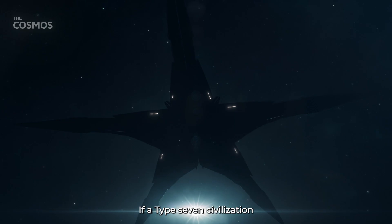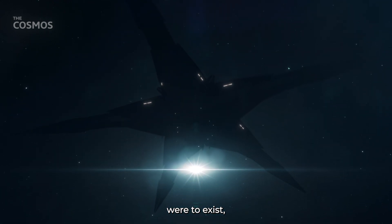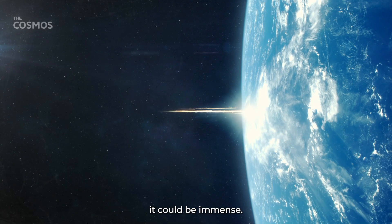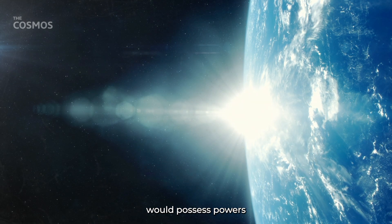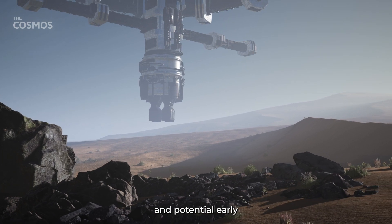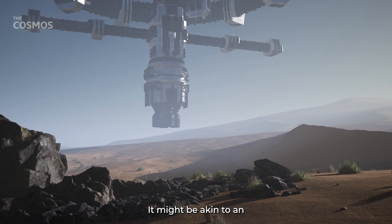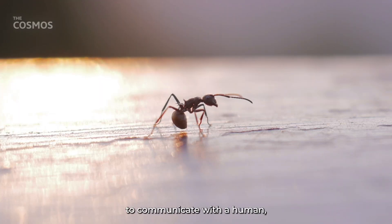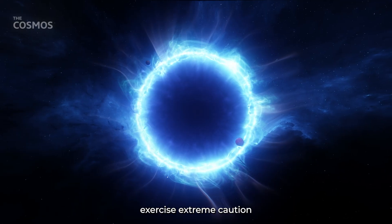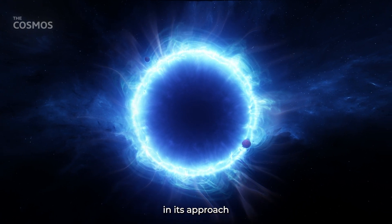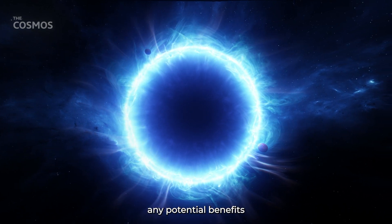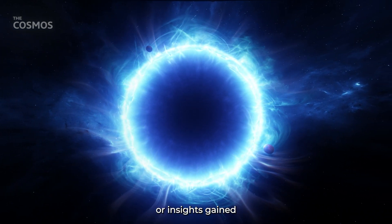Ethical Considerations. If a Type 7 civilization were to exist, the ethical considerations surrounding any attempts to contact or interact with it could be immense. Such a civilization would possess powers and knowledge far beyond our comprehension, and any engagement with it might have unforeseeable and potentially catastrophic consequences. It might be akin to an ant attempting to communicate with a human, but on an even more incomprehensible scale. Ethics might argue that humanity should exercise extreme caution or even complete avoidance in its approach to such a hypothetical entity. The risks involved could be so profound that they outweigh any potential benefits or insights gained from making contact.